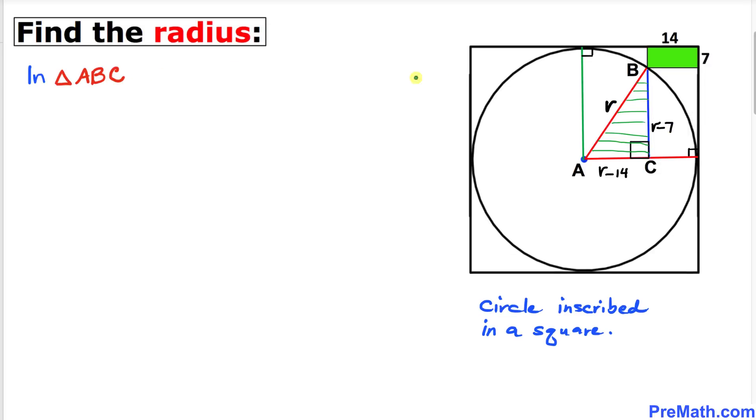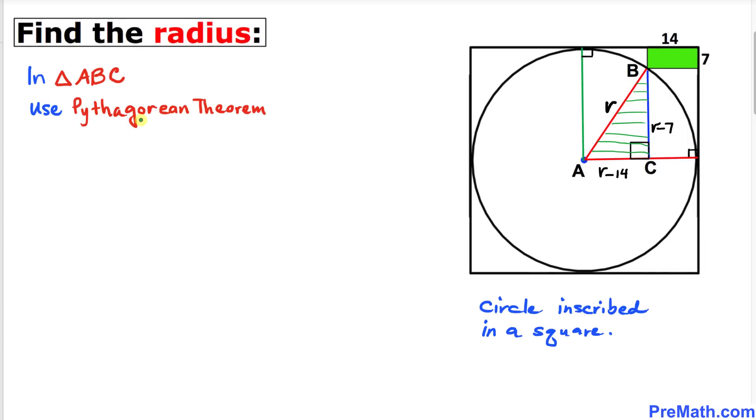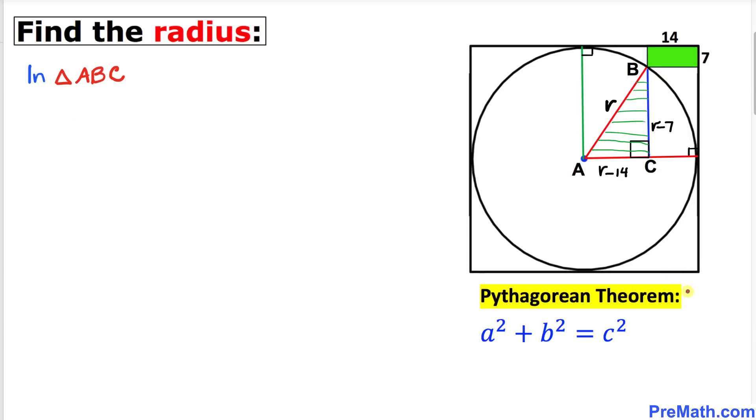Now let's focus on this triangle ABC whose side lengths are r minus 14, r minus 7, and r. Since this is a right triangle, therefore we are going to use the Pythagorean theorem. Here's our Pythagorean theorem: a squared plus b squared equals c squared.